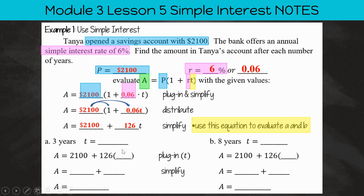Now we're going to use this equation to evaluate A and B. So A is three years, and we need to plug in three for our T now. And so in our formula, A is equal to 2100 plus 126 T. We're now going to replace the T with the three. And when we do 126 times three, we get 378.